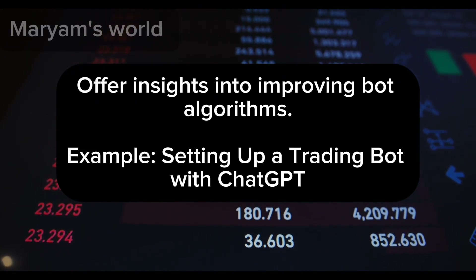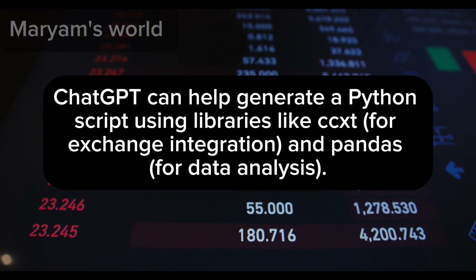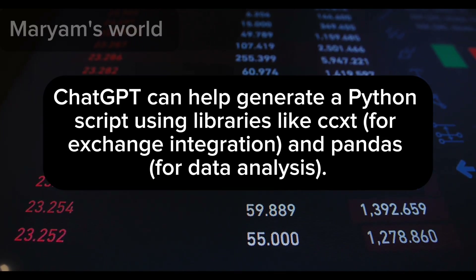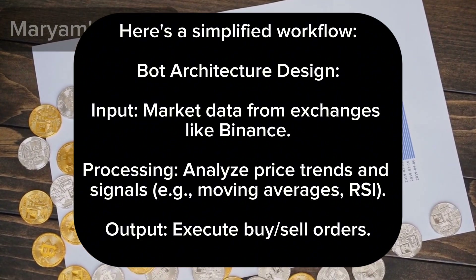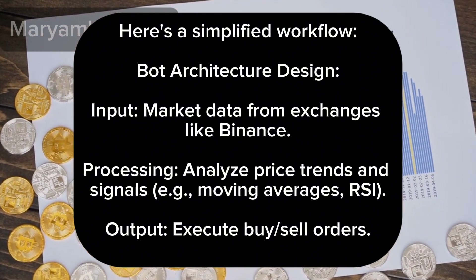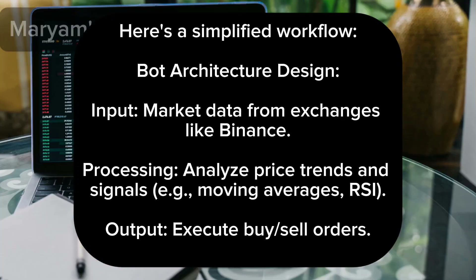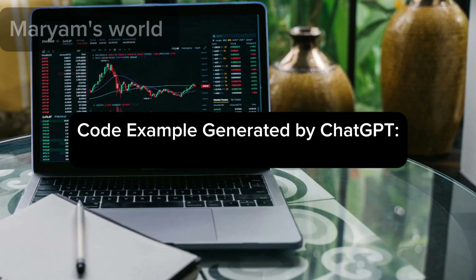Setting up a trading bot with ChatGPT: ChatGPT can help generate a Python script using libraries like CCXT for exchange integration and pandas for data analysis. A simplified workflow includes bot architecture design — input: market data from exchanges like Binance; processing: analyze price trends and signals such as moving averages and RSI; output: execute buy/sell orders. ChatGPT can generate the code example.